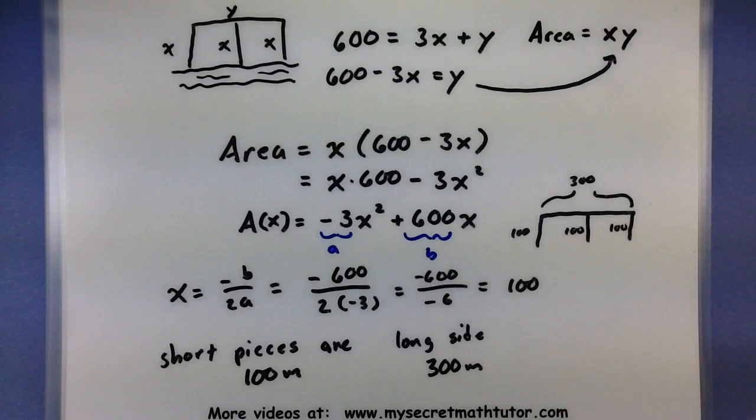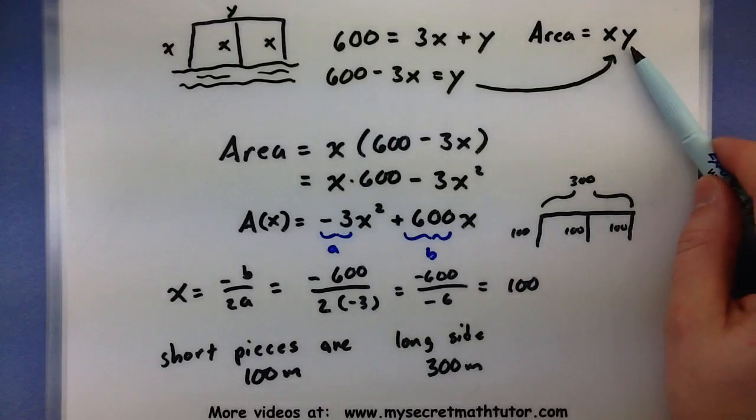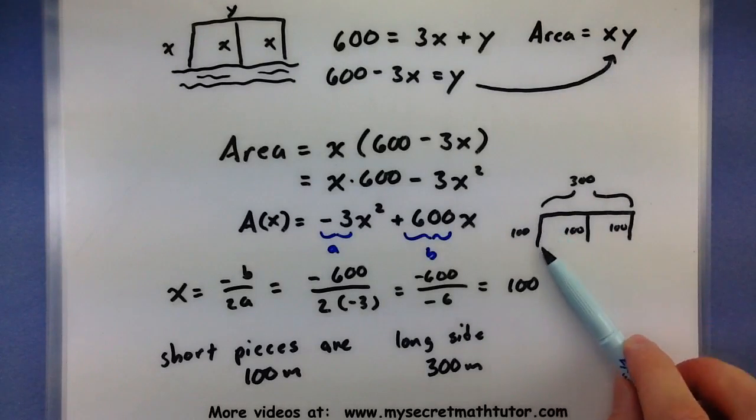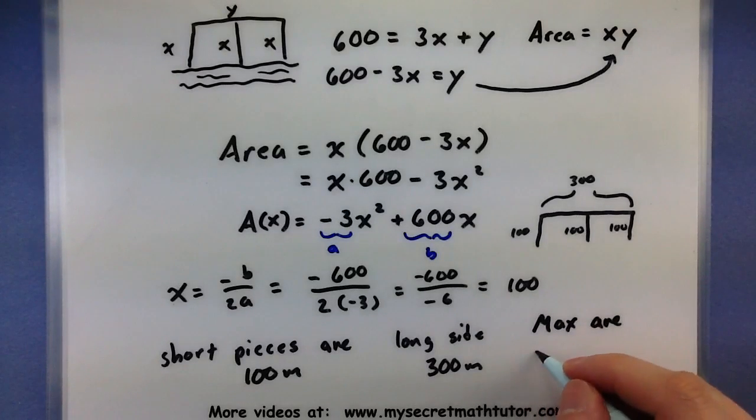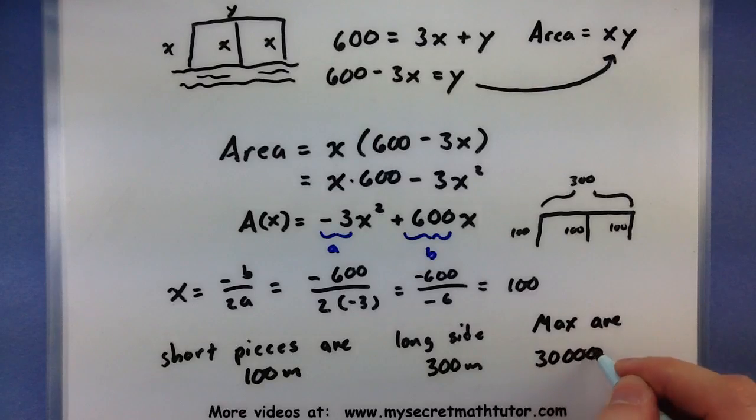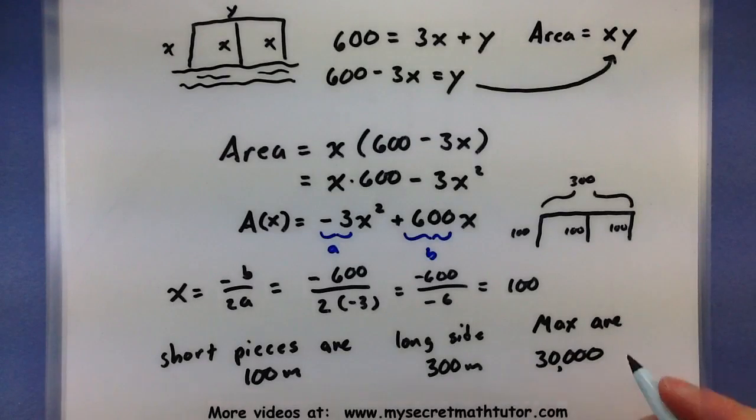Now to finally answer the question, what is the maximum area? I can go all the way back to my area formula and see that I need to multiply the 100 by the 300. So max area would be 30,000 meters squared. So just like that, using the formula negative b over 2a, you can quickly find the maximum of your quadratic function.